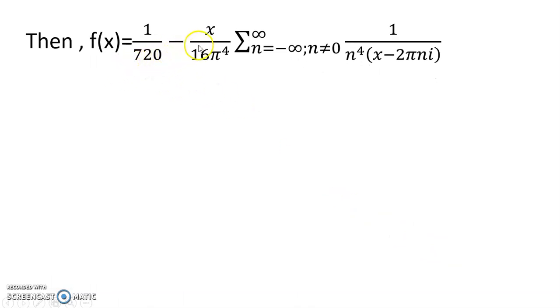And f(x) equals 1/720 minus x/(16π⁴) times summation n equals minus infinity to infinity, n does not equal to 0.